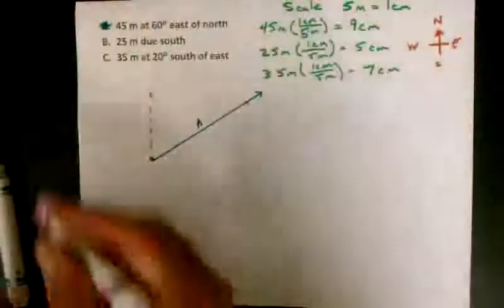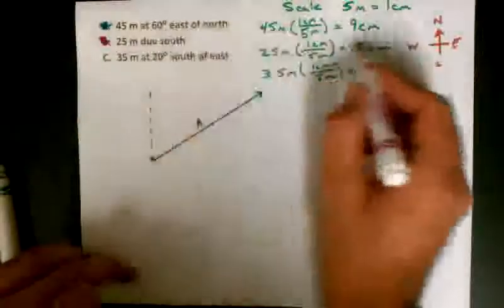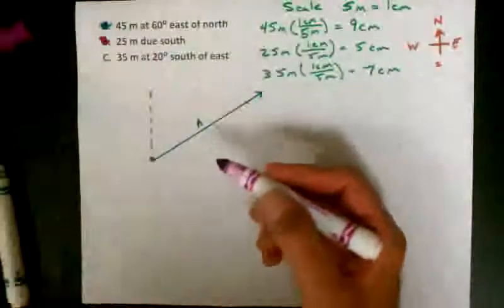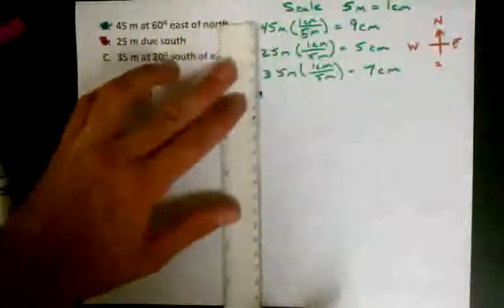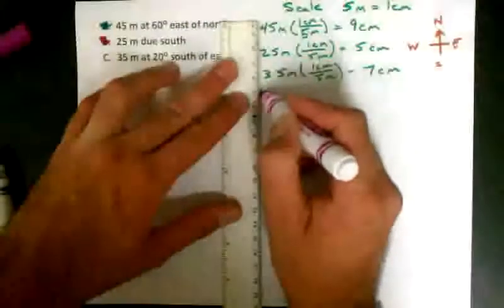Next, we'll try vector B. Vector B should be 5 centimeters straight south, so I can do that with just my ruler. Point it straight down and draw a line 5 centimeters.